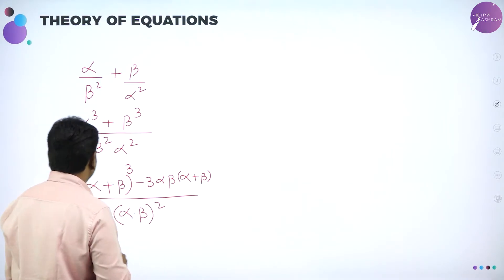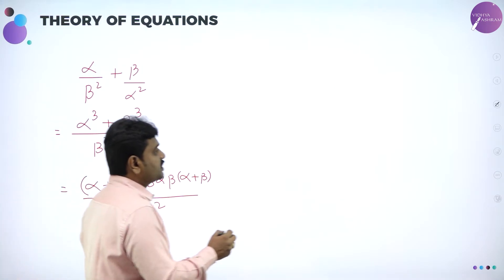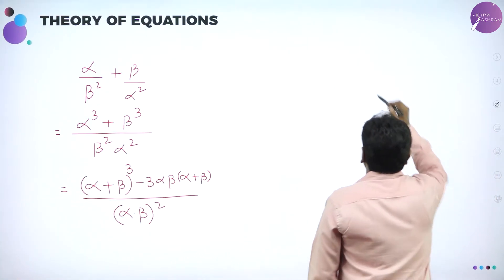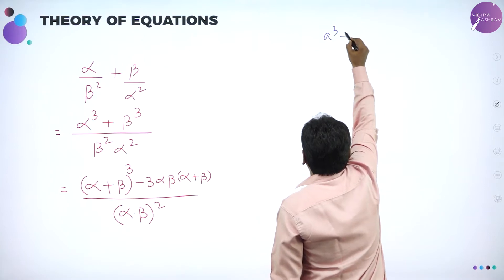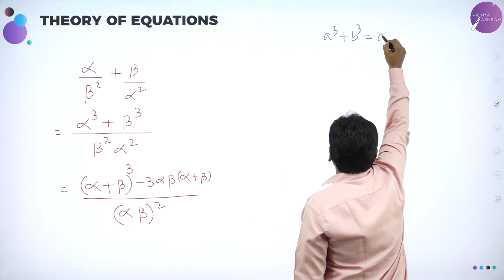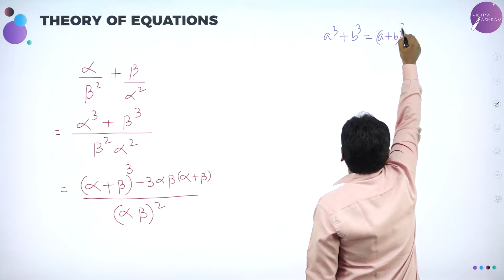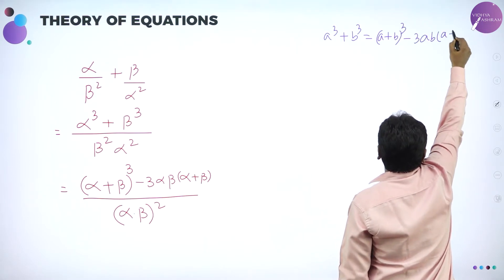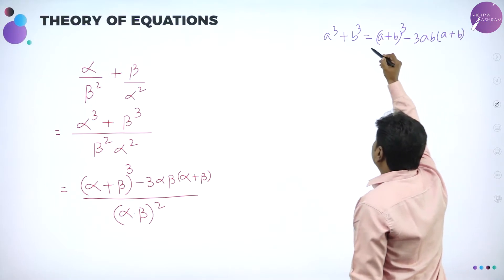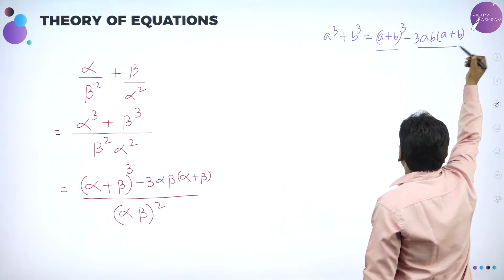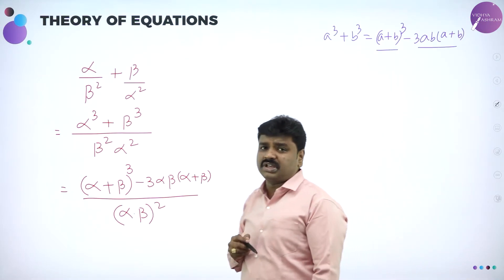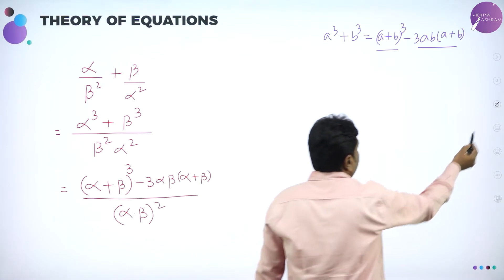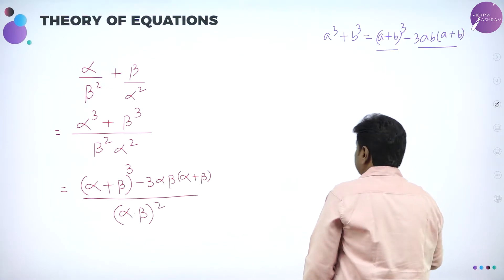Two basics we are using here. Basic number one: A cubed plus B cubed in mathematics can be written as A plus B the whole cubed minus 3AB into A plus B. You should be thorough with this identity. A cubed plus B cubed can also be written as A plus B the whole cubed minus 3AB into A plus B. That basic helps you to write the answers easily.